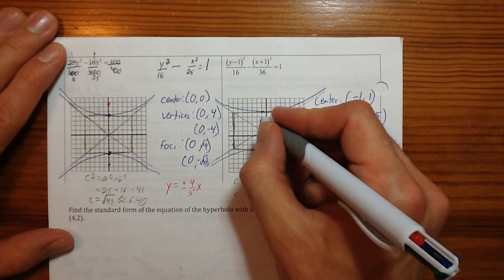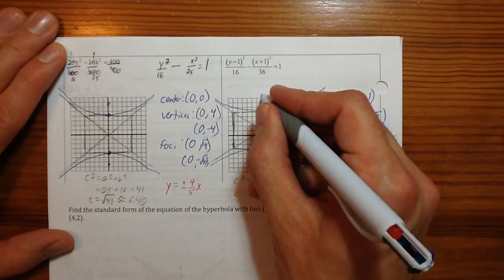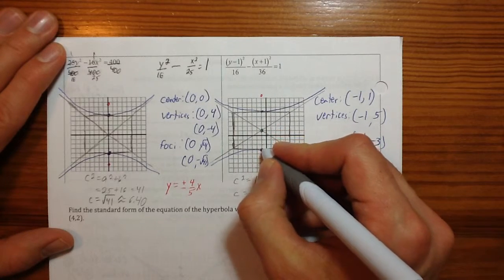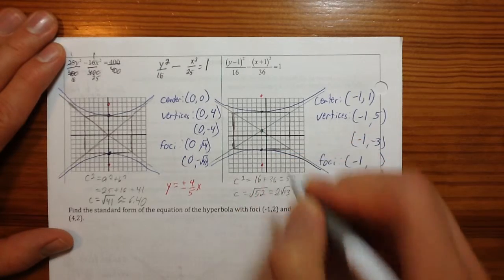About 7.21. So we are going to go 7.21 above the center and 7.21 below the center. So 1, 2, 3, 4, 5, 6, 7, and a smidgen more runs us off the graph. That's okay. 1, 2, 3, 4, 5, 6, 7, and a smidgen more. There are our foci.